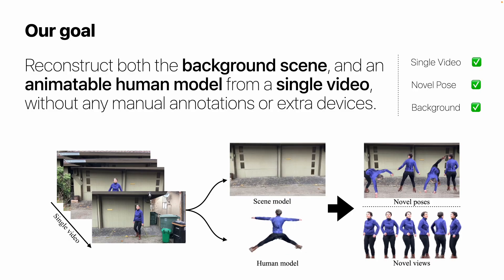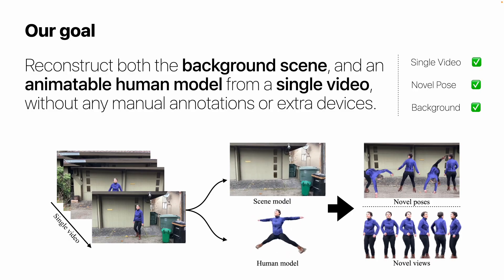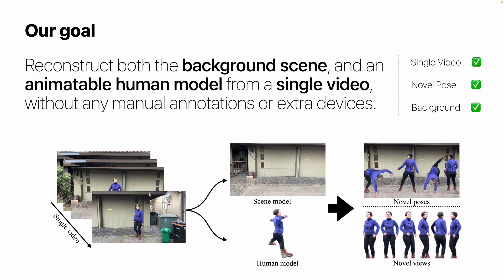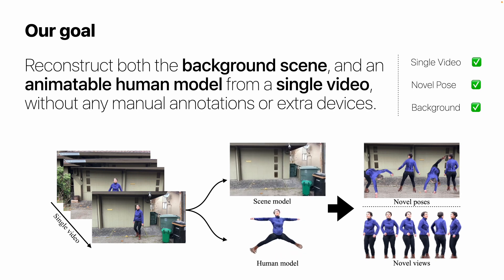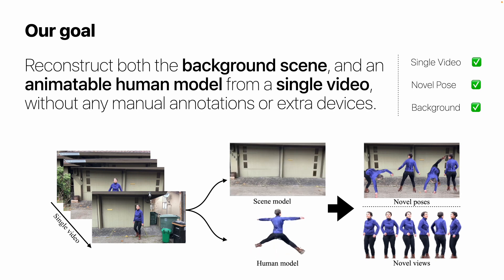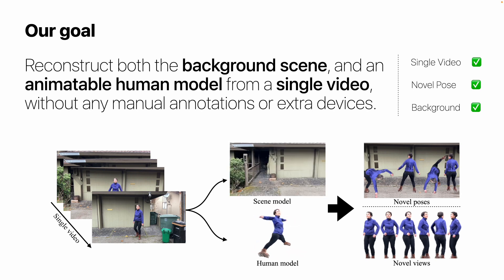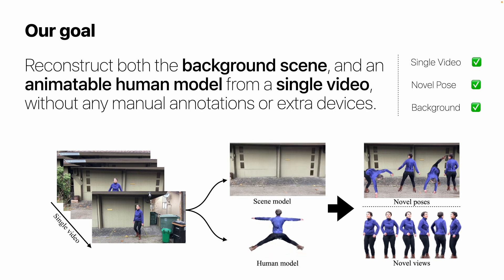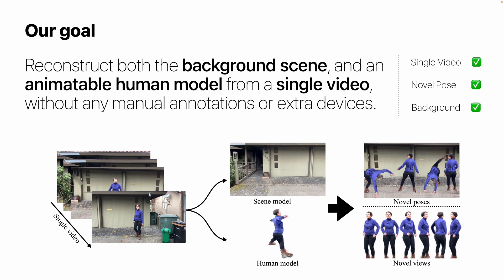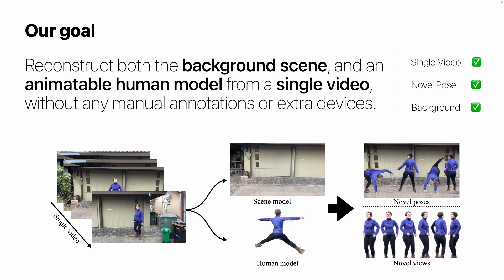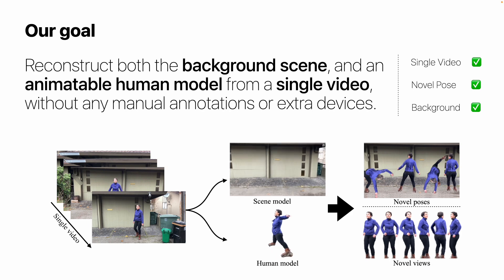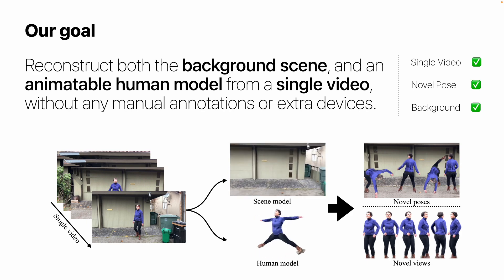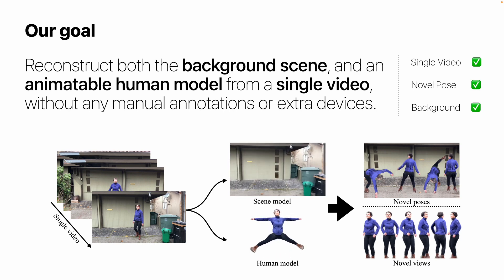Our goal is to reconstruct both the background scene and an animatable human model from a single video. On the left is the input video, and we reconstruct the scene and human models as shown in the middle. With the two reconstructed models, we can render novel poses of the human, as well as novel views.